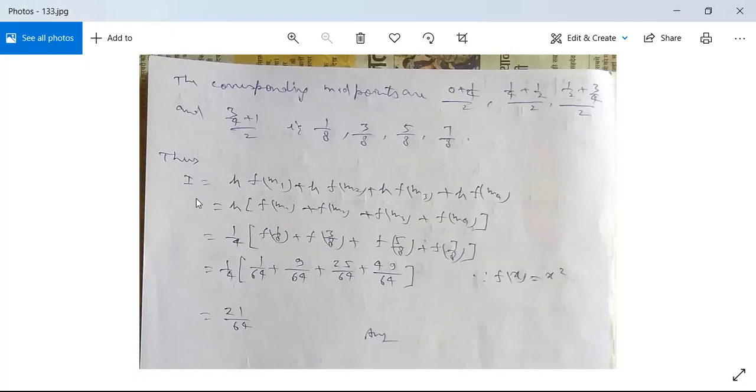Thus I is given as summation of h into f(mᵢ), so h times f(m₁) plus h times f(m₂) plus h times f(m₃) plus h times f(m₄). h is common in all terms, so this equals h times [f(m₁) plus f(m₂) plus f(m₃) plus f(m₄)]. This equals 1/4 times [f(1/8) plus f(3/8) plus f(5/8) plus f(7/8)].